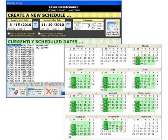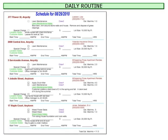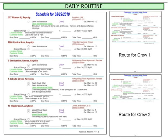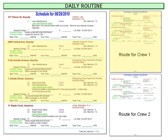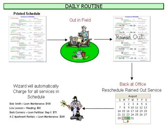Typically, you only need to set up your service schedules once a season, unless new services or customers are added during the season. The daily routine will be to view your daily schedule to see what jobs need to be done. If you have crews or workers, you may want to divide the day's jobs up and assign them to their associated worker or crew's route. The route names would correspond to the name of the worker or crew. Now it's time to print the schedule or route and go out into the field to perform the services.